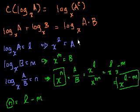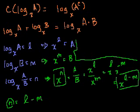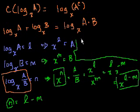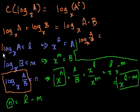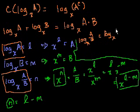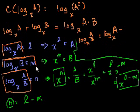We have stumbled upon another logarithm rule. What's another way of writing n? Logarithm base x of a over b is equal to l minus m — that is, log base x of a minus log base x of b.